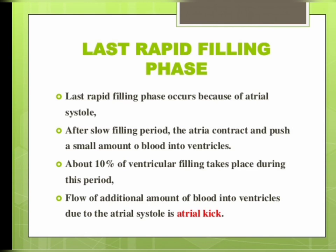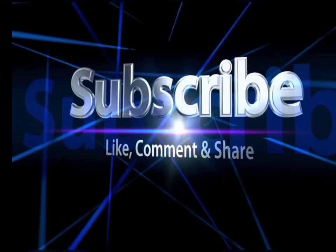The last rapid filling phase occurs because of the atrial systole. After the slow filling period, the atria contract and push a small amount of blood into the ventricles. About 10 percent of ventricular filling takes place during this period. The flow of this additional amount of blood into the ventricles due to the atrial systole is called the atrial kick. If you like my video please hit the like button, thank you.